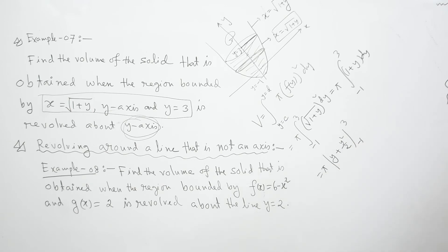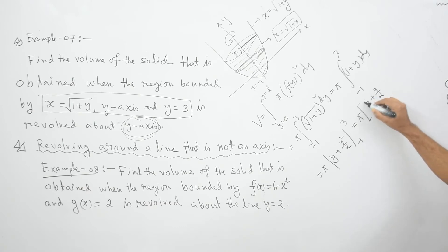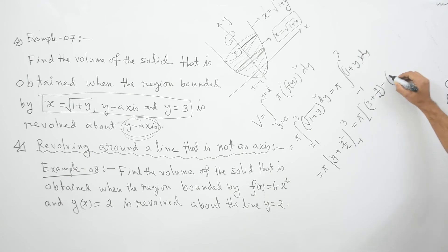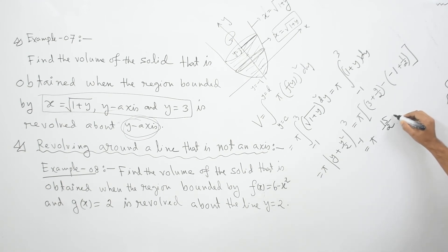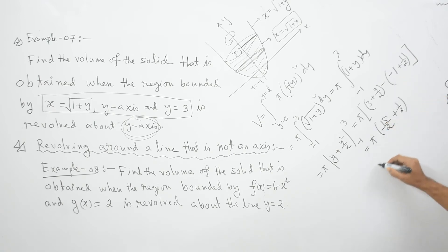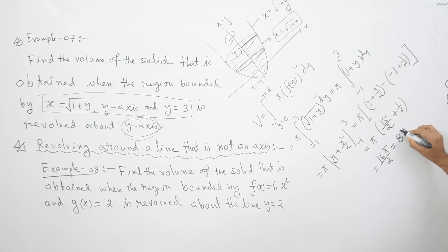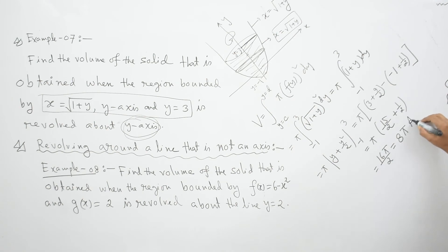This equals π times [y plus y²/2] from negative 1 to 3. Substituting the upper limit: 3 plus 9/2 equals 15/2. Substituting the lower limit: minus 1 plus 1/2 equals minus 1/2. So 15/2 minus (minus 1/2) equals 15/2 plus 1/2 equals 16/2 times π, which equals 8π. So the volume of this solid material is 8π.